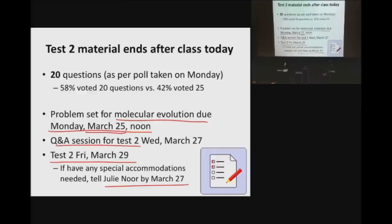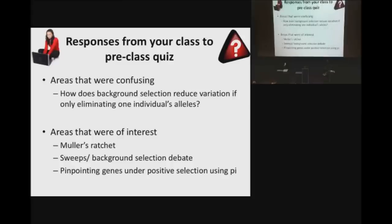Without further ado, let's go into today's material. I appreciate your responses from the pre-class quiz. Not many people said things were confusing. One thing that came up a lot was: how does background selection reduce variation if it's only eliminating one individual's alleles? That's counterintuitive. I remember when I first heard about background selection, this bugged me as well. I'll go into that in a little detail and recap a couple of points about the relationship between selective sweeps and background selection.